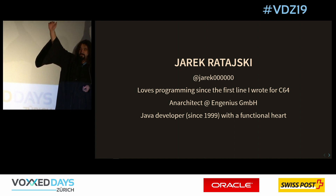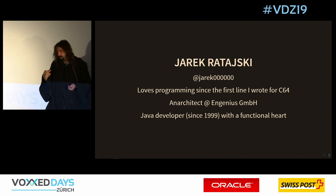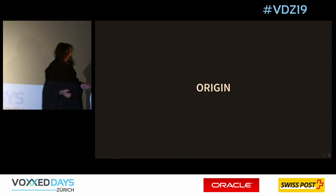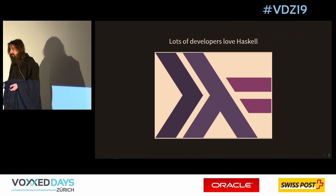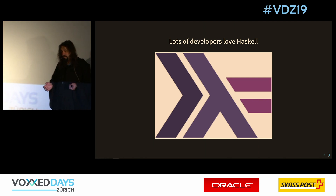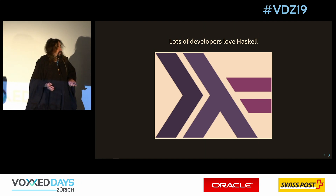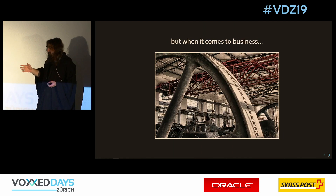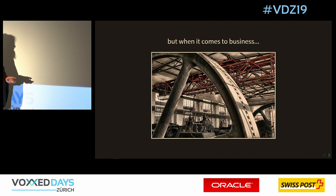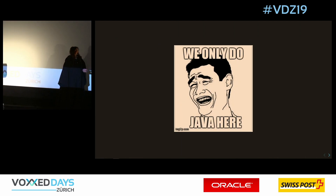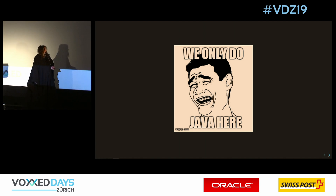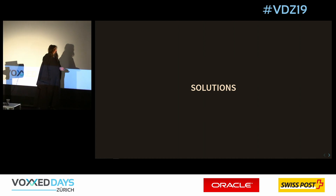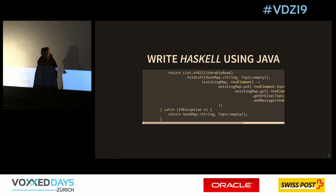An architect is someone from the ivory tower - if you fall down, you are an architect. So what's behind this talk? Why am I even here? The fact is I meet a lot of developers who actually love Haskell. It's a very nice, decent language. But when you go to a normal customer, the typical message you get from the ivory tower is: sorry, no Haskell, just Java 6, and everything is perfect.